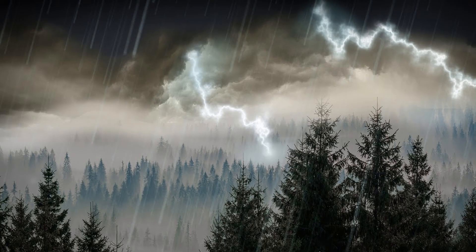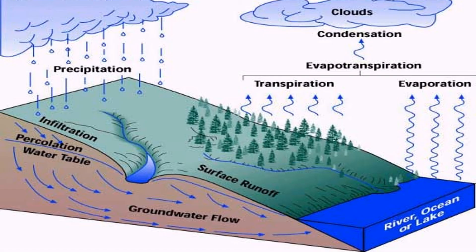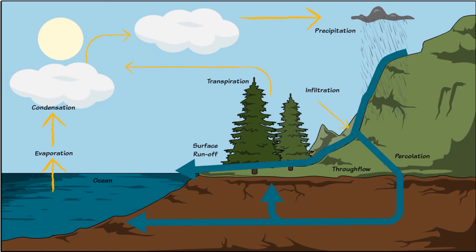After the rain, snow, or hailstorm falls down on the earth, it lands in the river or goes underground, going deep inside the earth and making a long journey to reach the ocean. When it arrives in the ocean, it will again begin the process of the water cycle — that is, evaporation, condensation, precipitation.